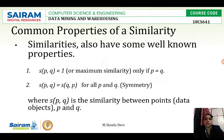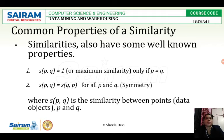Now, common properties of similarity. Previously we saw common properties of dissimilarity. Similarities also have some well known properties: similarity s(p, q) is equal to 1 when both are similar — if p is equal to 3 and q is equal to 3, then the similarity is maximum and equal to 1. Also, s(p, q) is equal to s(q, p). This is the symmetric property — from p1 to p2, whatever the similarity is, the same holds from q to p.